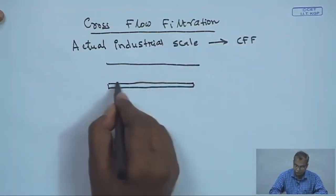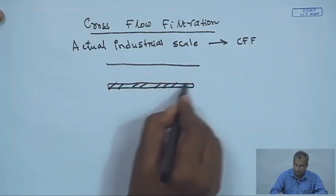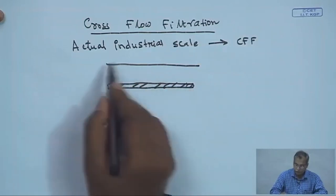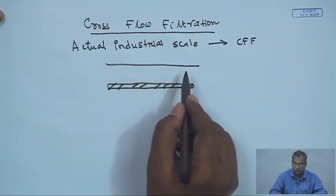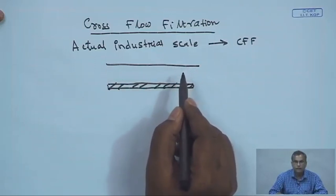In an actual module, membranes are placed on both the top and bottom surfaces of the channel so that the membrane surface area is maximized in a small volume, resulting in a very compact design. For now, we assume a membrane placed at the bottom surface, with this being the middle, or half-height, of the channel.